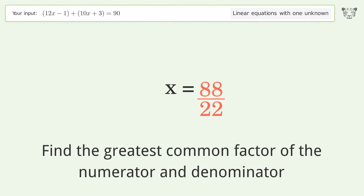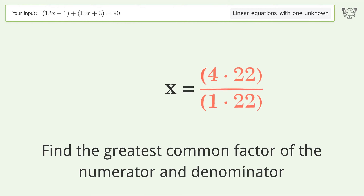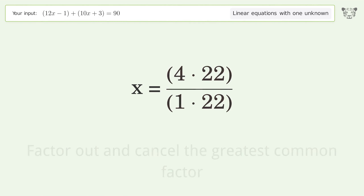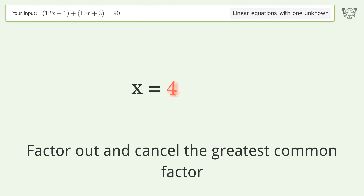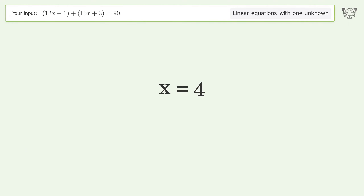Find the greatest common factor of the numerator and denominator. Factor out and cancel the greatest common factor. And so the final result is x equals four.